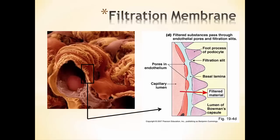Here's a different picture of it — an actual image where you can see a red blood cell sitting inside the capillary, and then the podocytes and filtration slits. Blowing up a section, we've got the fenestrations in the capillary, here's the basal membrane or basal lamina, and here are the processes of the podocyte with the filtration slits. Anything that moves from the blood has to pass through all those structures, and only small things end up going through and becoming part of the filtrate in the Bowman's capsule.